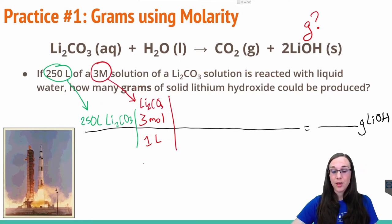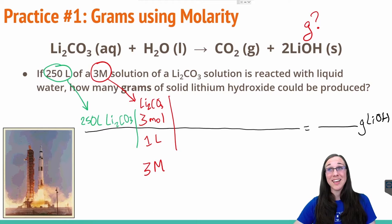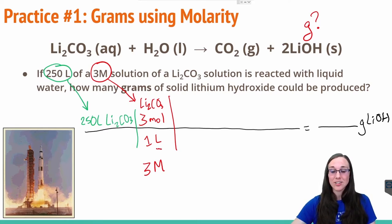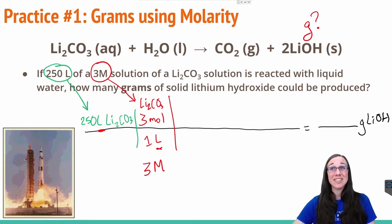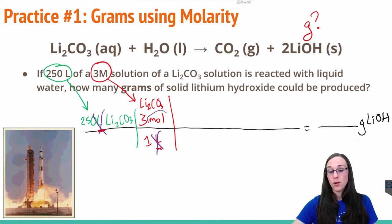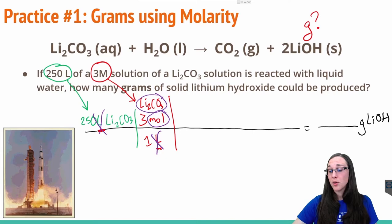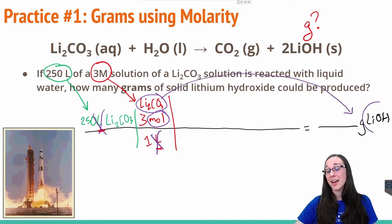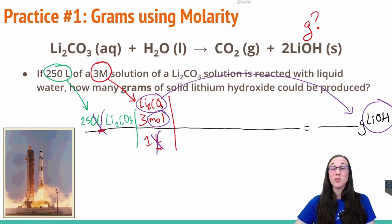Notice that I did not just say 3M in my dimensional analysis, because that doesn't help us with anything. We need to see that the liters can cancel, so we need to write out moles over liter. Now we see that our liters cancels and we're left with moles. We still need to get from moles of lithium carbonate to grams of lithium hydroxide — that's a different chemical. Anytime you see two different chemicals, you know you're going to need to use a mole ratio to convert between chemicals.